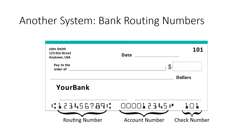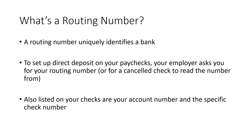Let's talk about one more system: routing numbers on a personal check. A routing number uniquely identifies a bank. You may have encountered this with direct deposit, where your employer asks for your bank information to deposit your paycheck directly into your checking account — what they're reading off the check is the routing number, so they know what bank to send the money to. Your account number and the specific check number are also at the bottom of the check.